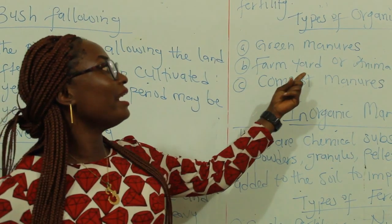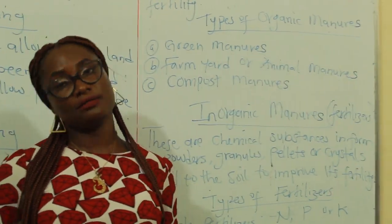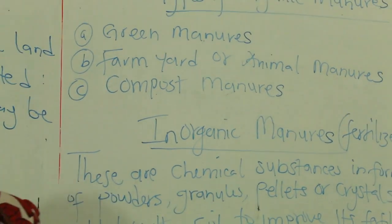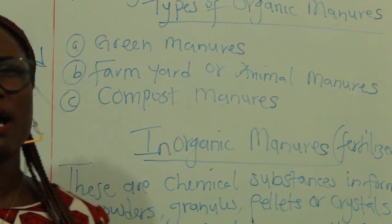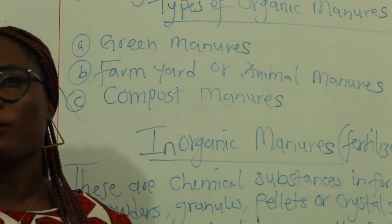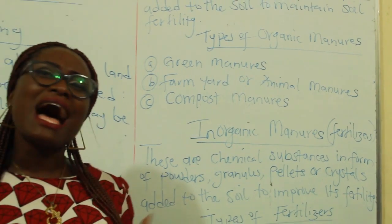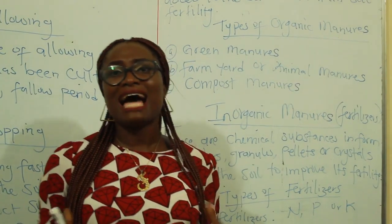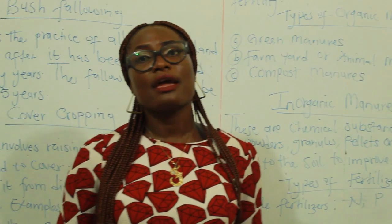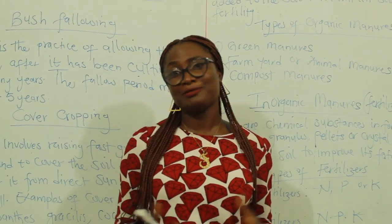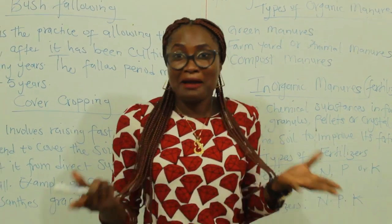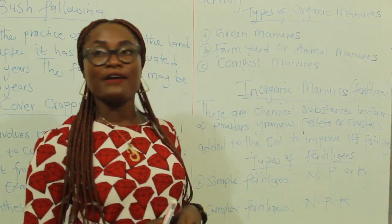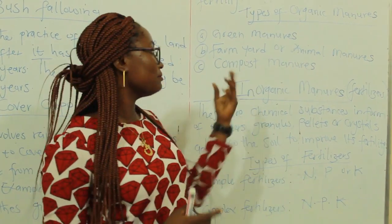The next type is farmyard or animal manures. From the name, what should come to your mind is that it comes from animals. These are animal dung added to the soil to maintain soil fertility. You know what dung is — it is animal feces. So that's farmyard or animal manures.